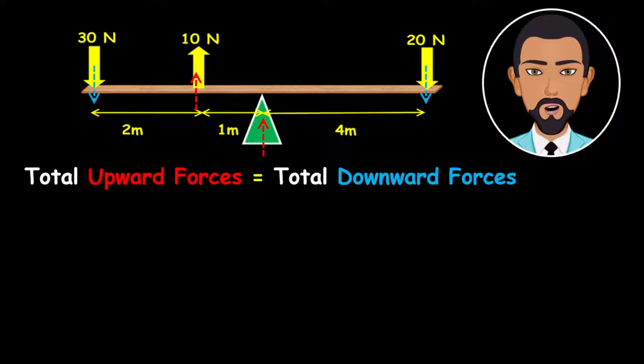Now let's call the unknown force of the pivot F. Therefore, the total upward forces will be the 10 newton force plus F, which is unknown.